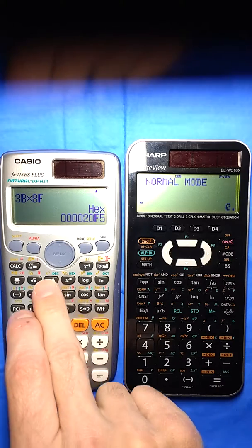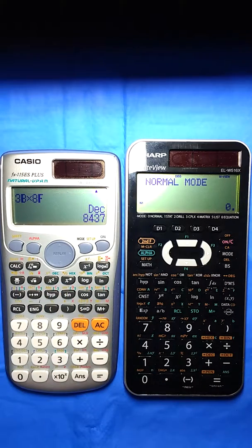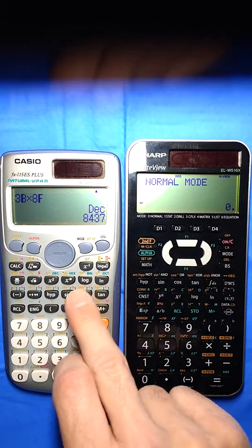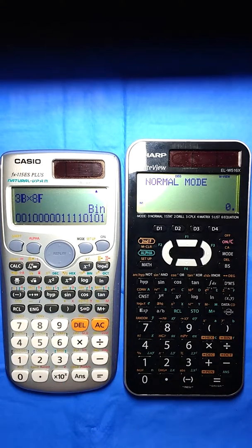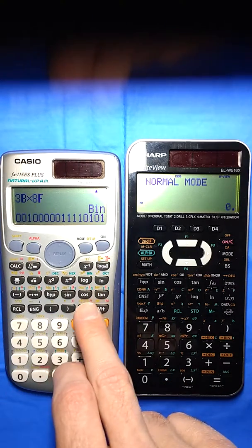If I want to know what it is as a decimal, I can hit decimal. Guessing it's too big for binary. Let's see if it blows up. Oh no, it does binary. So that's how you can go between them.